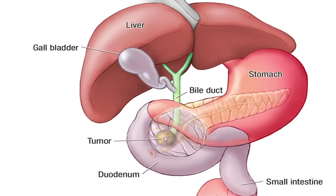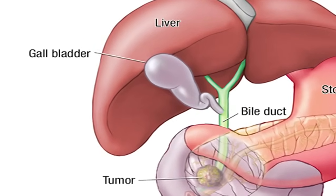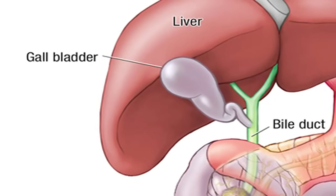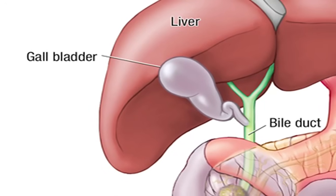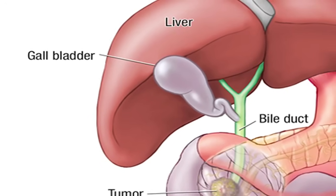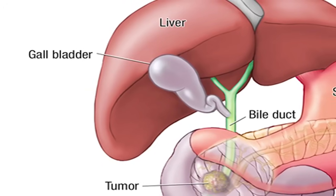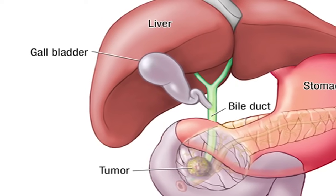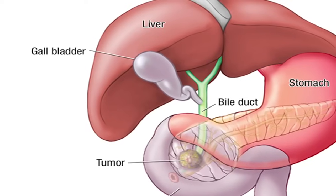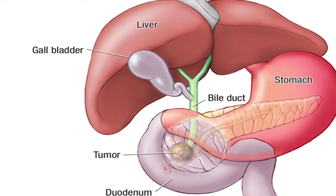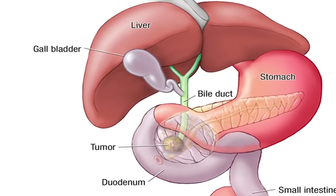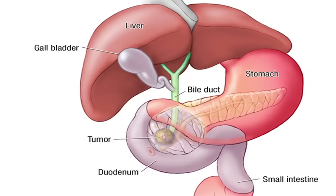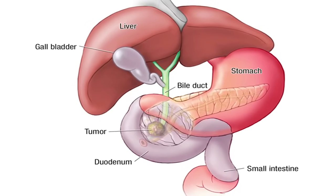Besides taking the head of the pancreas, the intestine, and this portion of the bile duct, we also need to take the gallbladder out. The reason is that the duodenum produces hormones that help the gallbladder function. Once we take the duodenum out, those hormones are no longer present, and therefore the gallbladder doesn't function normally. Additionally, taking all of this out may impair the blood supply of the gallbladder, putting it at risk of inadequate blood supply. The gallbladder is taken out at the same time as the surgery and really has no more consequences on the patient than everything else we have removed.